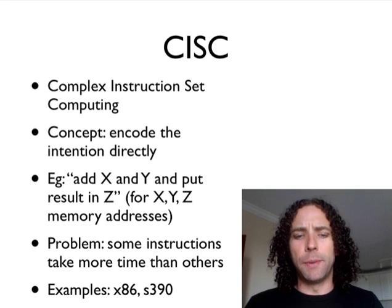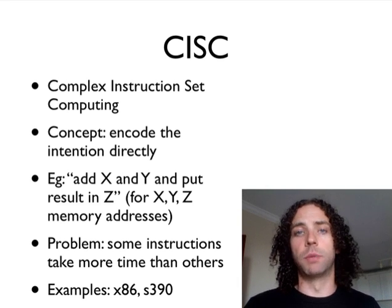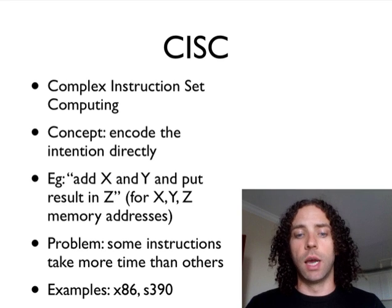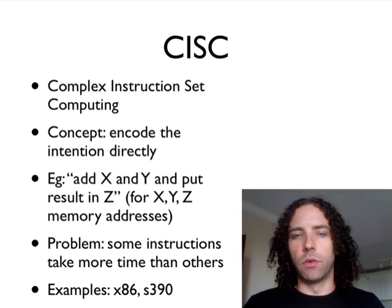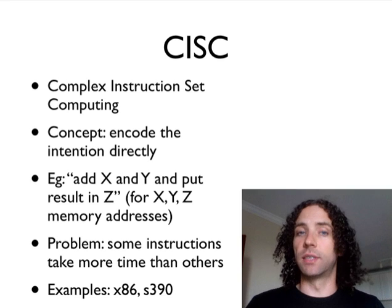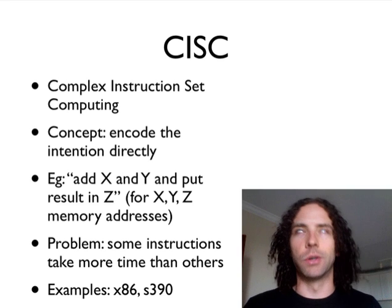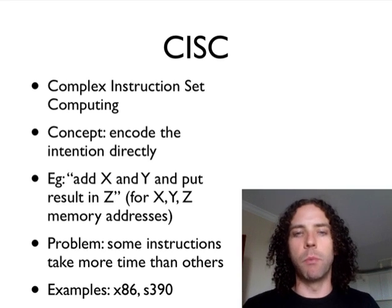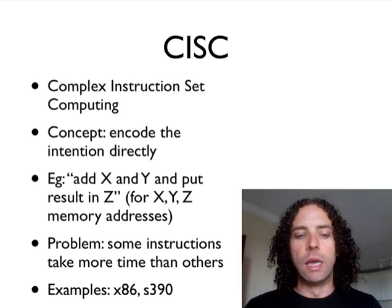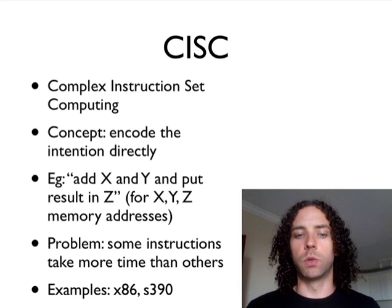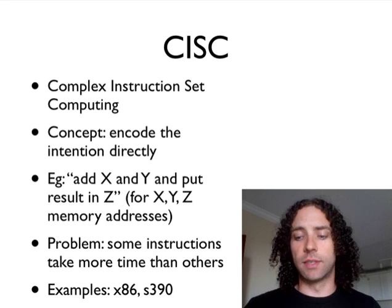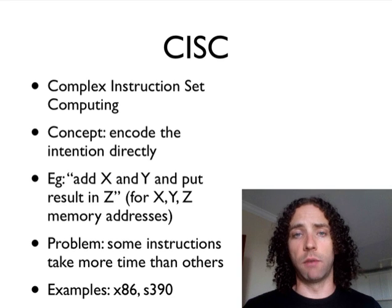Examples of CISC are the x86 architecture, which is used by most computers today. They've adapted their internal implementation, so even though it looks CISC on the outside, internally it actually does something a bit more RISC-like. The S390 is another one which used this architecture before and still exists today — it's used in mainframes.